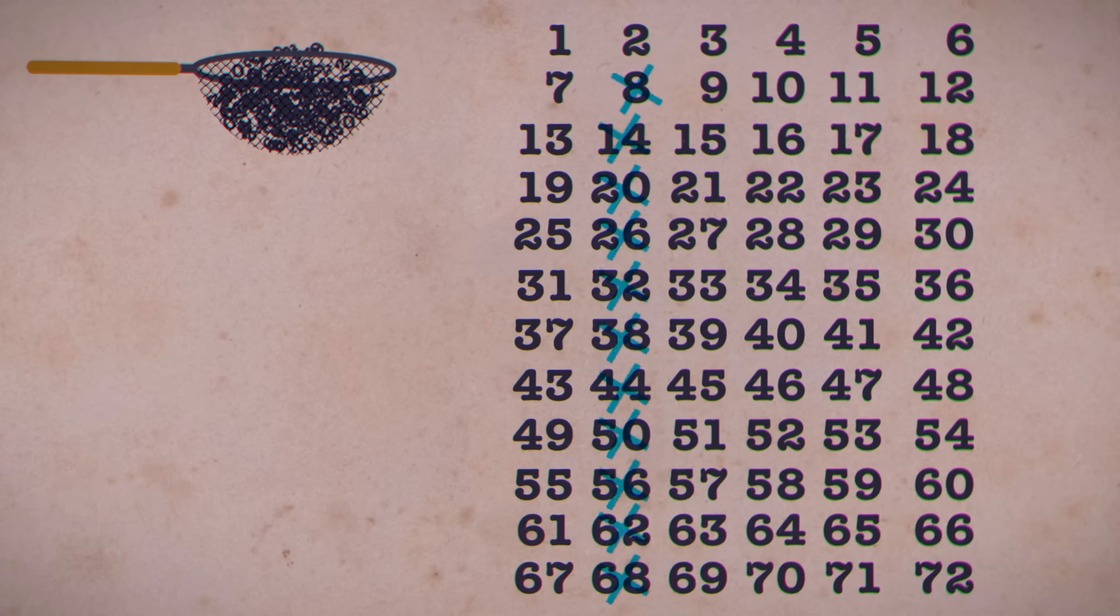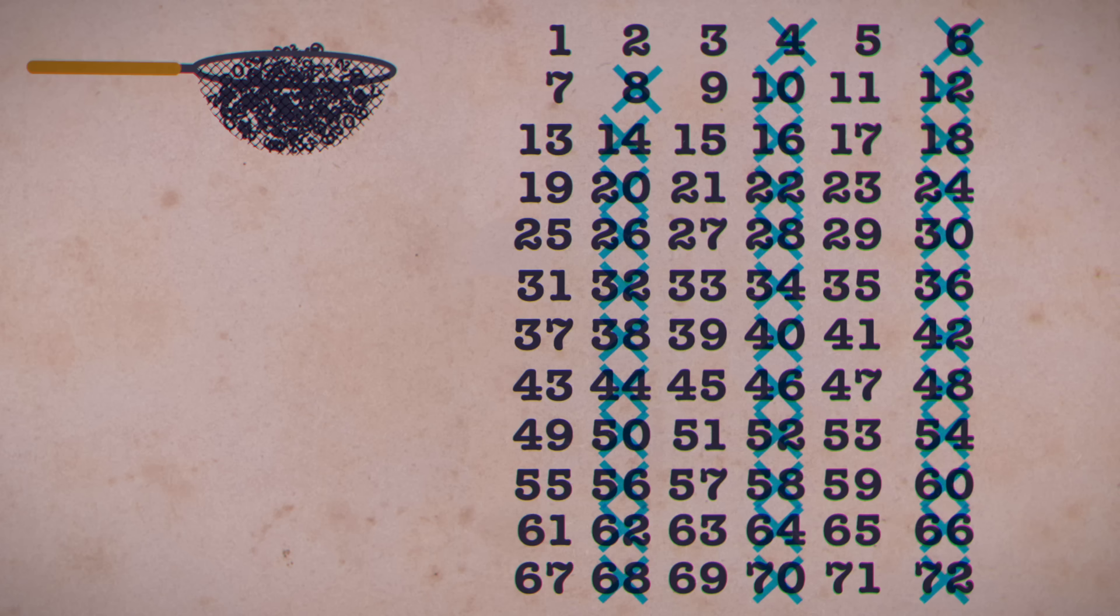Make a giant list of numbers. X out all of the multiples of 2 except 2 itself. Now do the same with multiples of 3.